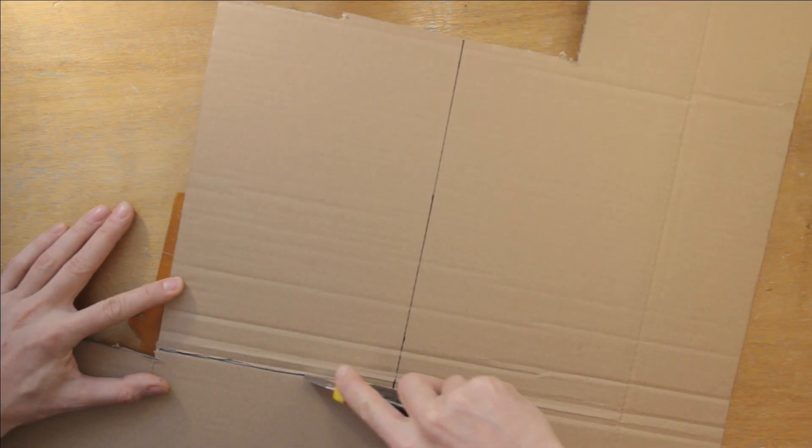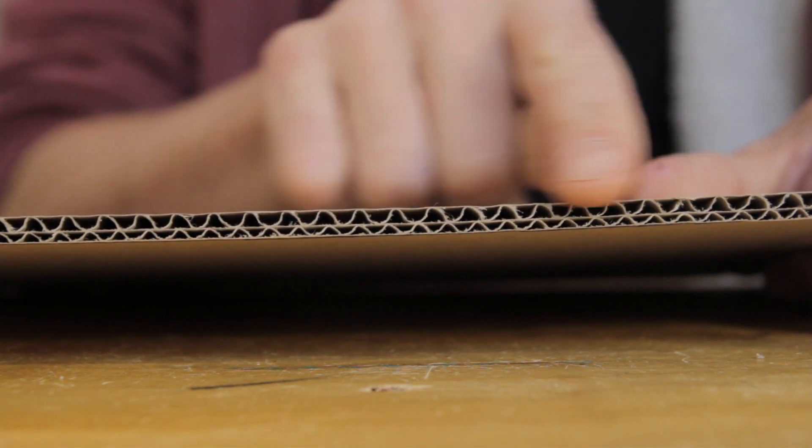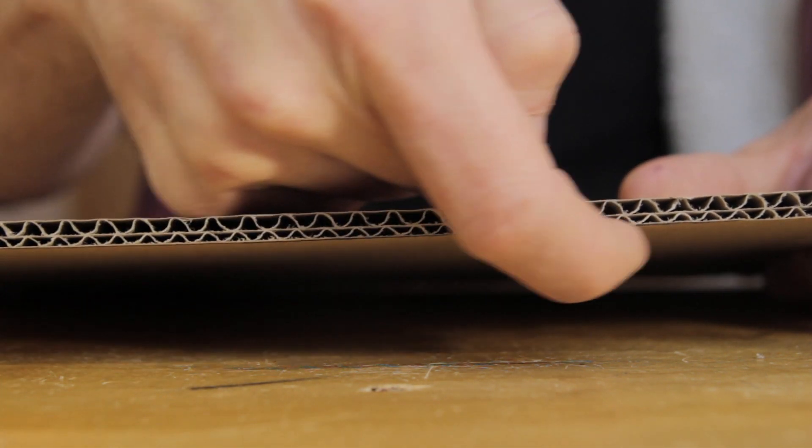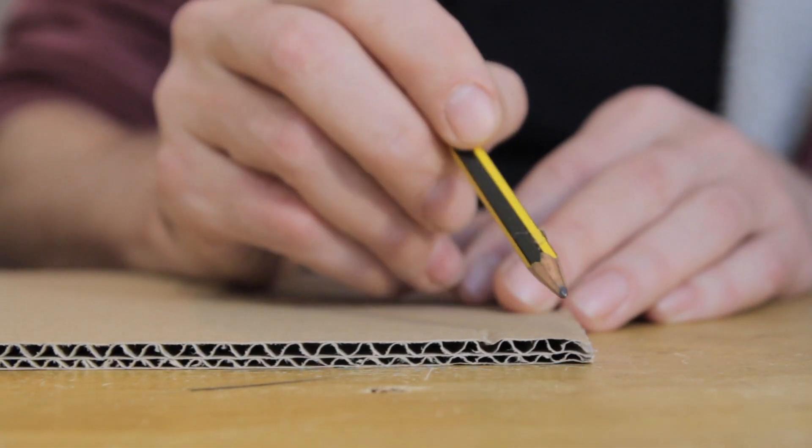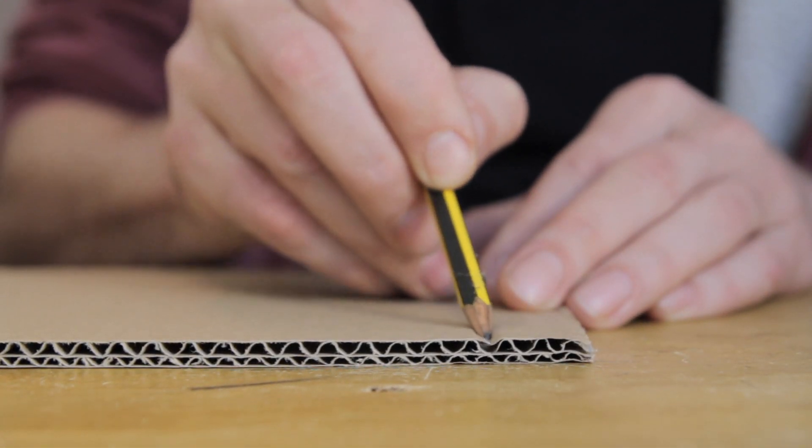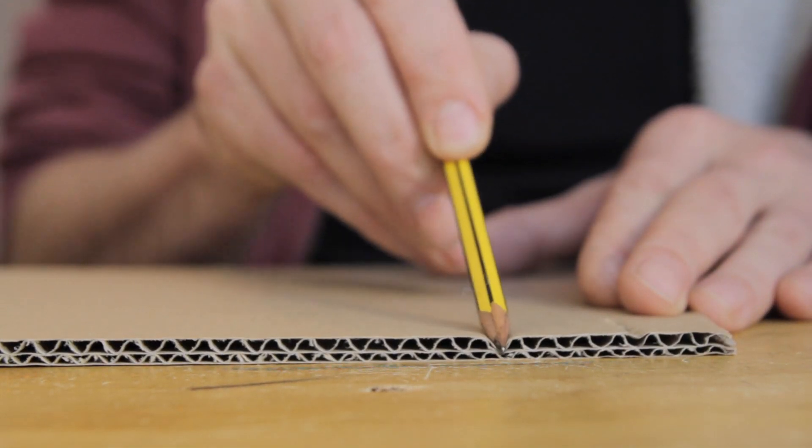First we need a piece of cardboard which is roughly 20 by 30 centimeters. Notice that the wave pattern in the corrugation is different sizes on one side and the other. We'll start out by using the larger size to measure out some sections. First count out three waves and then mark that position like this. Then we make another section four waves wide like this.